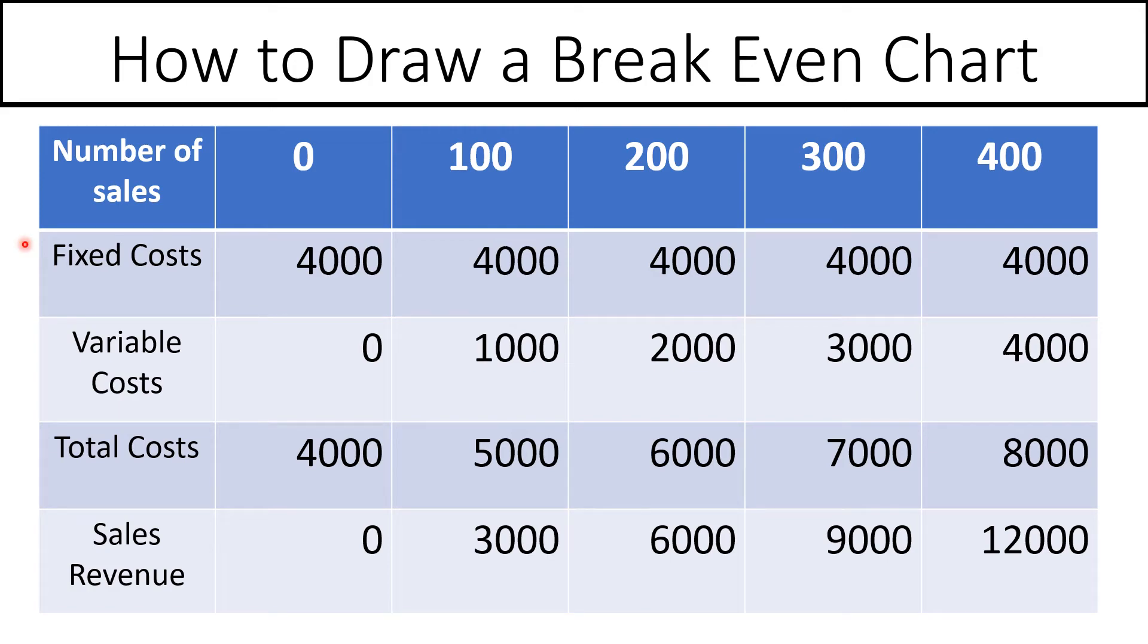We're now going to draw a break-even chart. Here is some break-even information for a business. You can see that they're thinking about selling at no sales, 100 sales, 200 sales, 300 and 400.